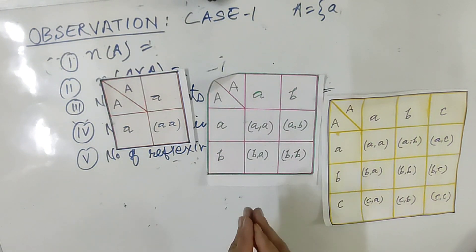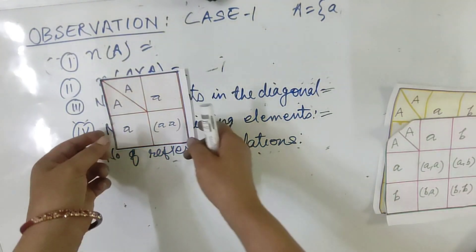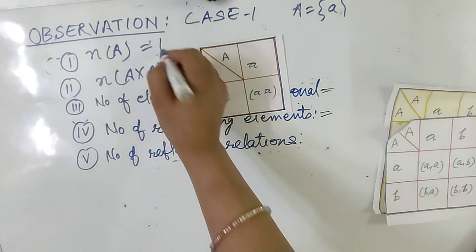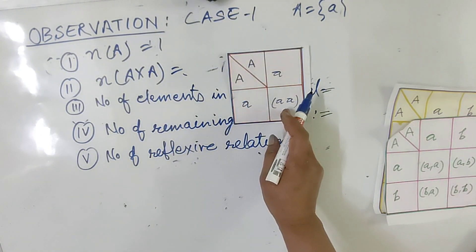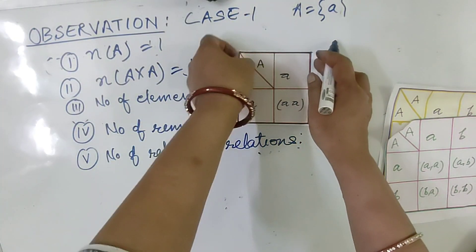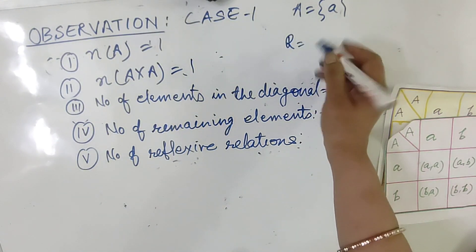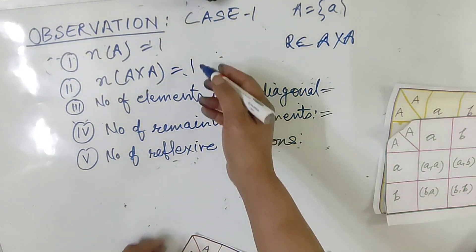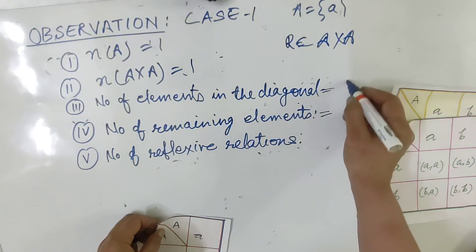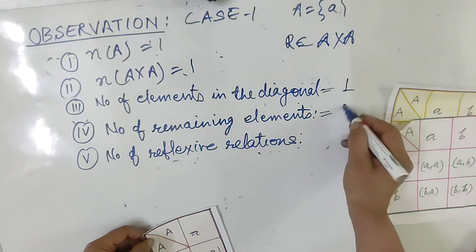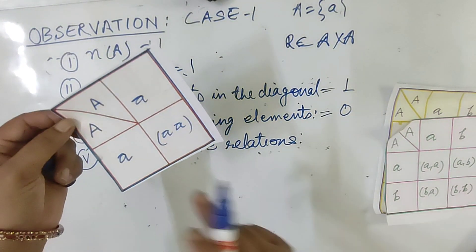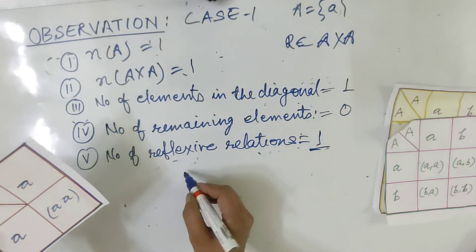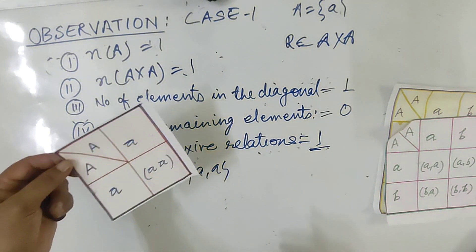Let us go for grid number 1. Grid number 1 means when set A has only one element. N is 1 and the number of elements in A×A will be 1×1 = 1. You know that R is a subset of A×A, and A×A has N×N elements, so this is 1 squared = 1. Number of elements in the diagonal: 1. Remaining elements: 0. And reflexive relations — there is only one element, and it is the reflexive element itself. So the total number of reflexive relations is 1.